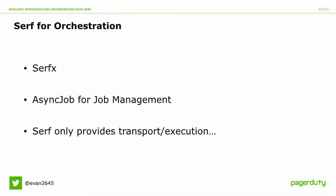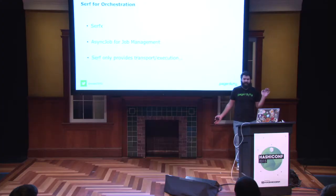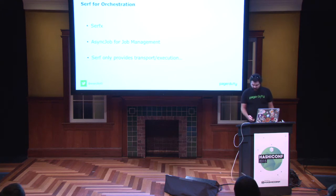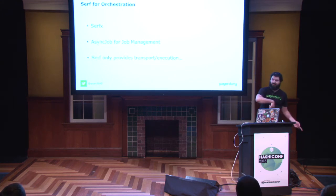When you take a step back, you realize we've really only built command dispatch and job management. There are still a lot of missing pieces. We still need a place to define these jobs, specify concurrency and ordering. We still really need the orchestration engine.